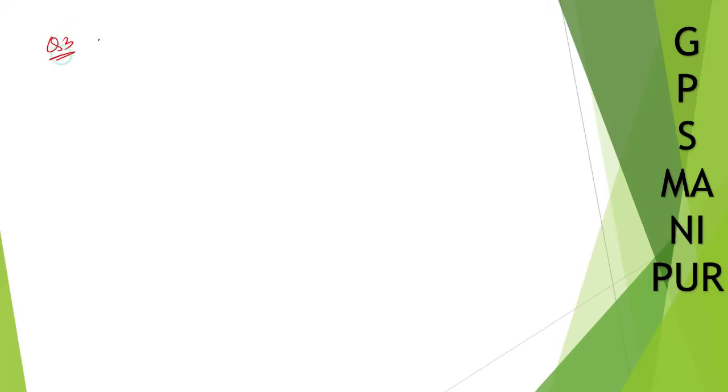Now we are doing question number 3. Find 4 different solutions, row number 2. The equation is 4x plus 3y is equal to 12. We need to find 4 different solutions.